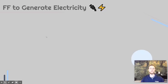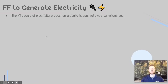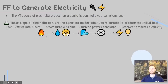Next, we'll talk about the generation of electricity from fossil fuel sources. The number one source globally of electricity production is coal, closely followed by natural gas. The big concept here is that electricity generation always comes from these consistent steps, rather than memorizing individual details.